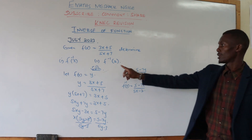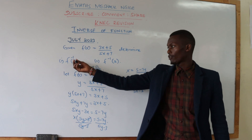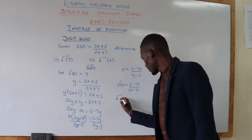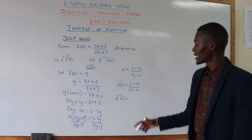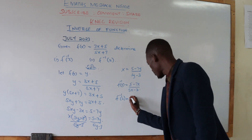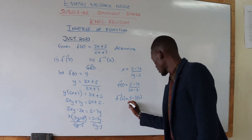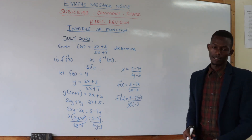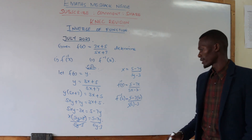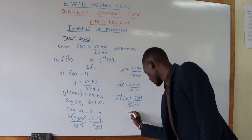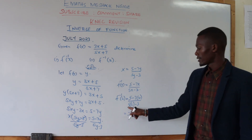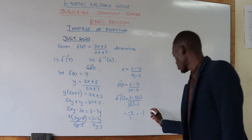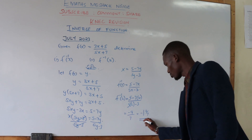The second step is simple. Now that we have found the inverse function, when the value of x is 2, we replace x with 2. So we shall have 5 minus 7 times 2, all over 5 times 2 minus 3. That gives us 5 minus 14 on top, which is negative 9, and 10 minus 3 on the bottom, which is 7. So your value of f inverse of 2 is negative 9 over 7.